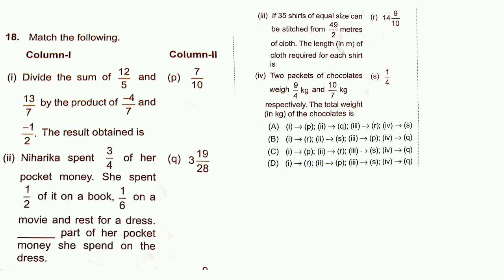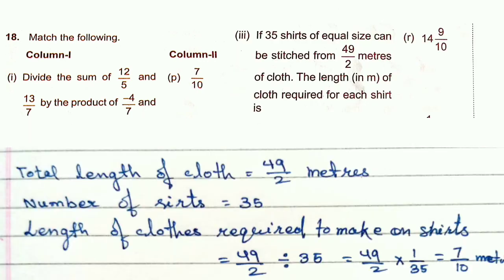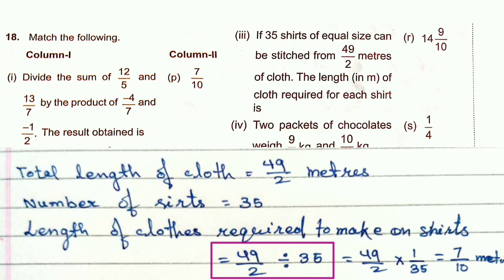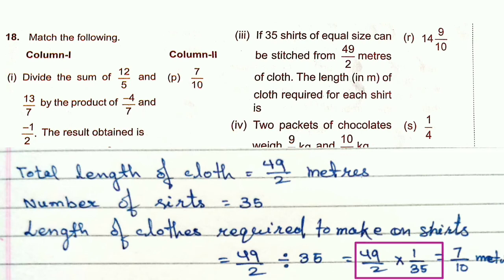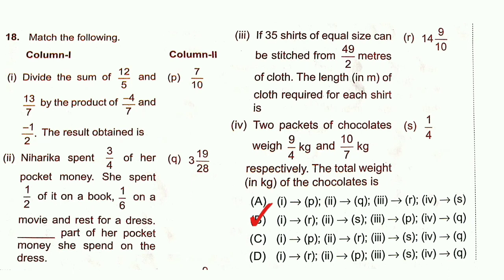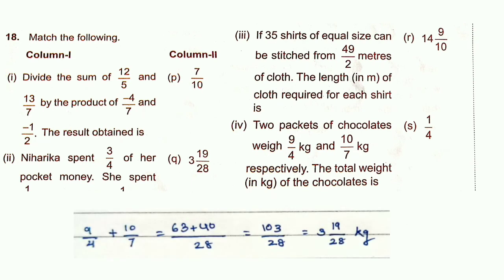Statement 3: 35 shots of equal size can be stitched from 49/2 metres of cloth. Length per shot = (49/2) ÷ 35 = 49/2 × 1/35 = 7/10 metres. Statement 3 matches with P. Statement 4: Two packets of chocolates weigh 9/4 kg and 10/7 kg. Total weight = 9/4 + 10/7 = 63/28 + 40/28 = 103/28 kg = 3 19/28 kg. Statement 4 matches with Q.